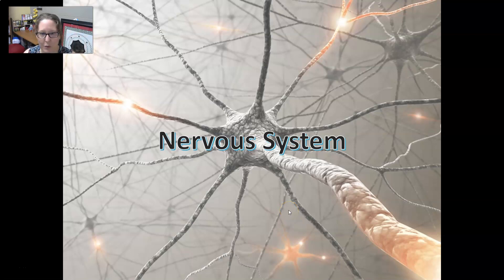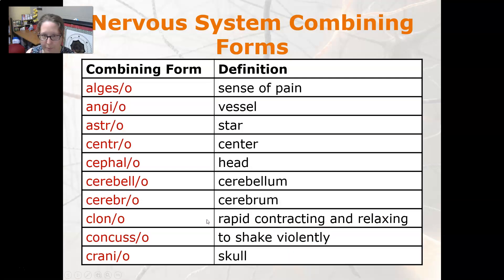Hi, this is Dr. A with your medical terminology video on the word parts of the nervous system. Let's start with the combining forms. Algesio is a sense of pain — think analgesia.